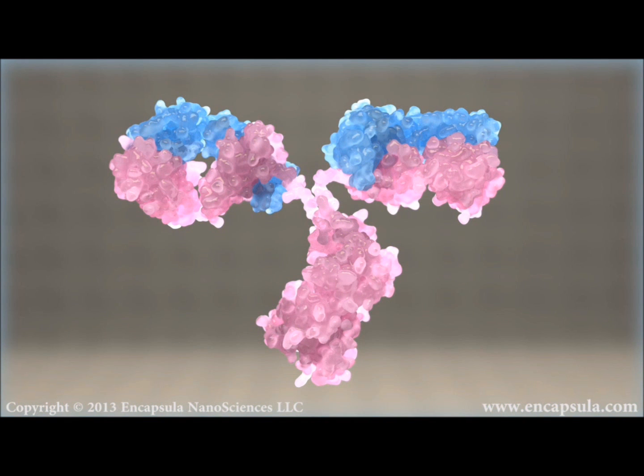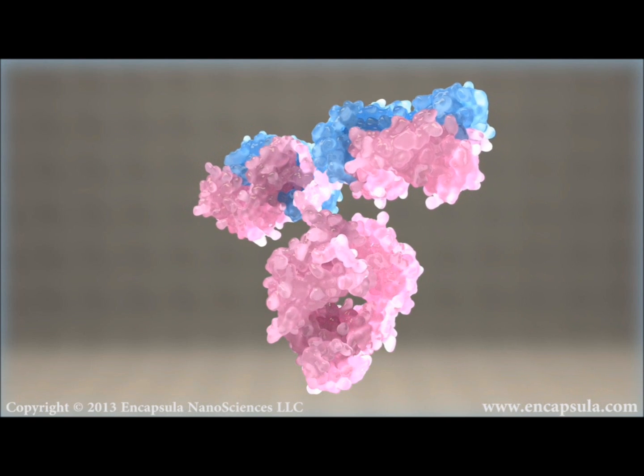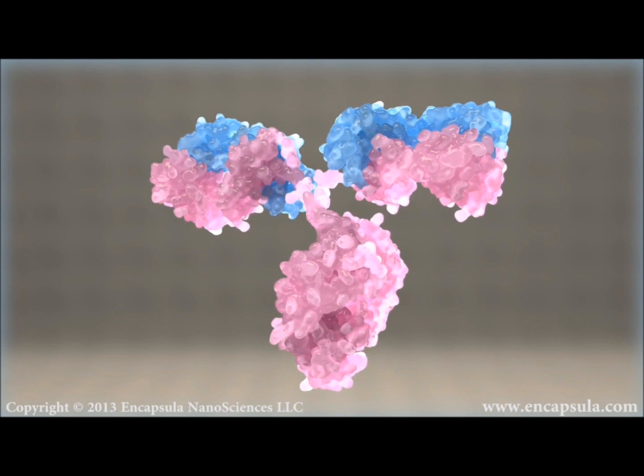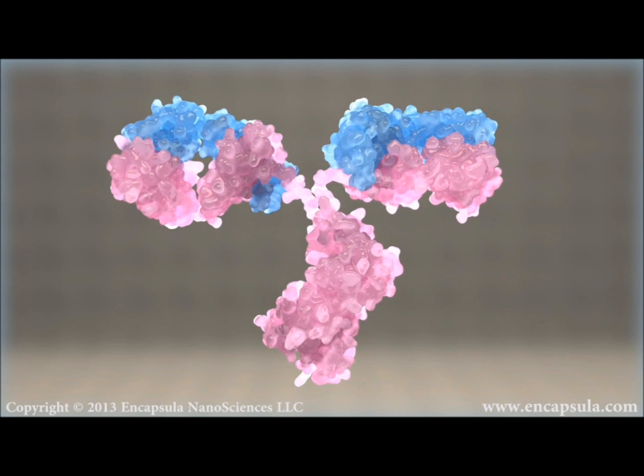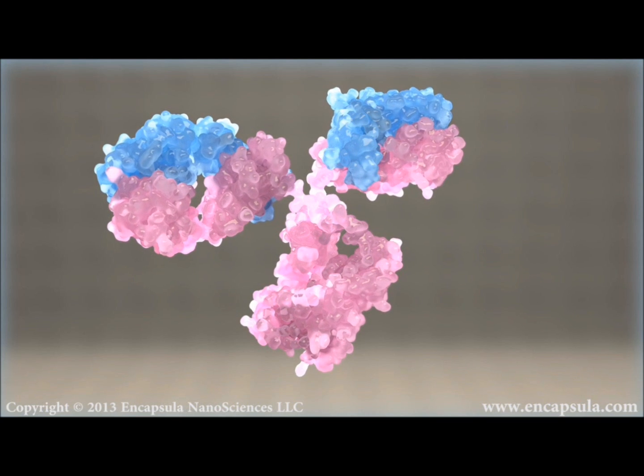Antibodies are large Y-shaped proteins produced by plasma cells. Immunoglobulin G is the most common type of antibody found in blood. The innate immune system utilizes these proteins to identify and neutralize foreign objects, such as bacteria and viruses.